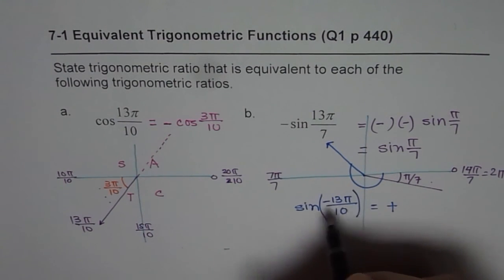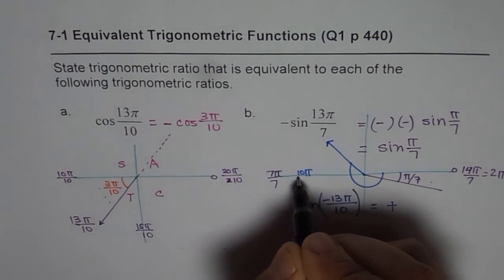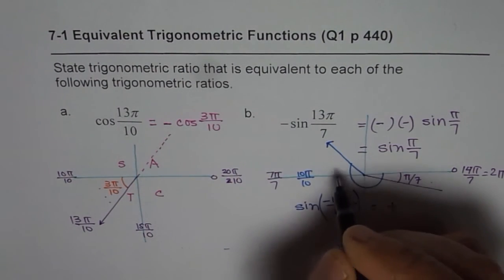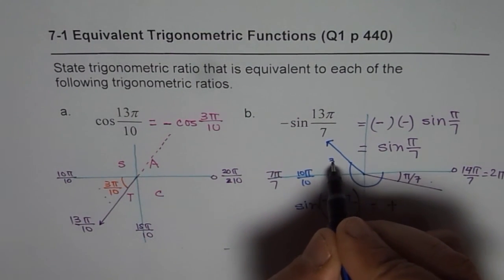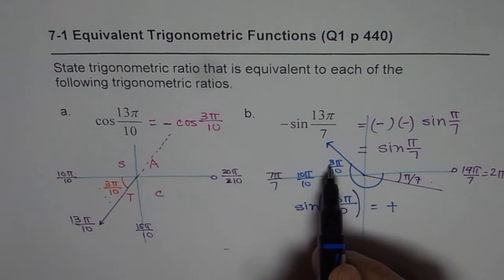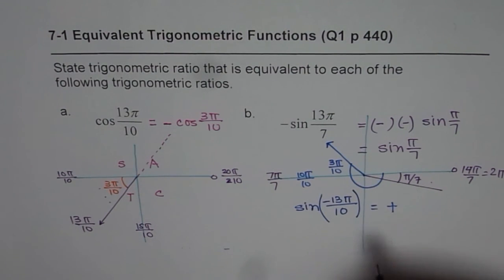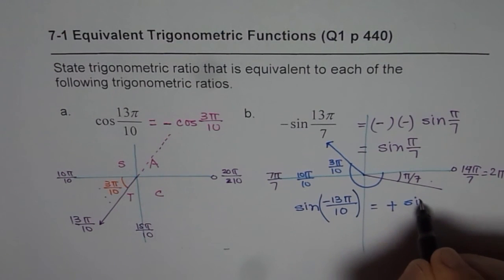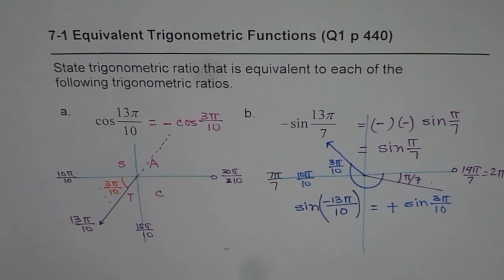Acute angle is 3π by 10. So I should be writing this as sin 3π by 10 as our answer, right? I hope that helps.